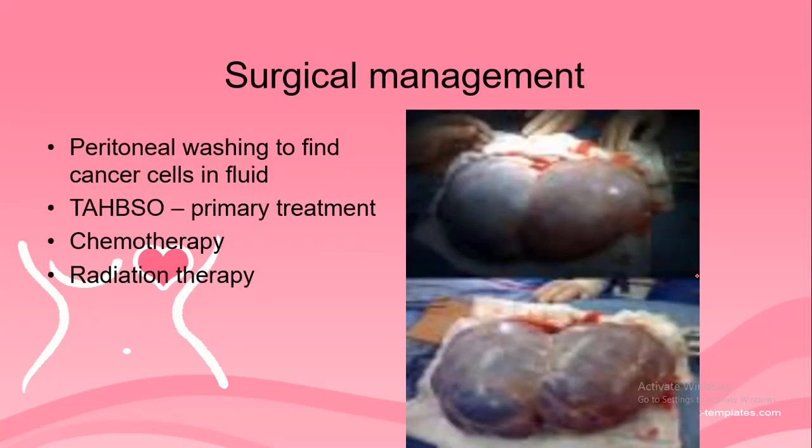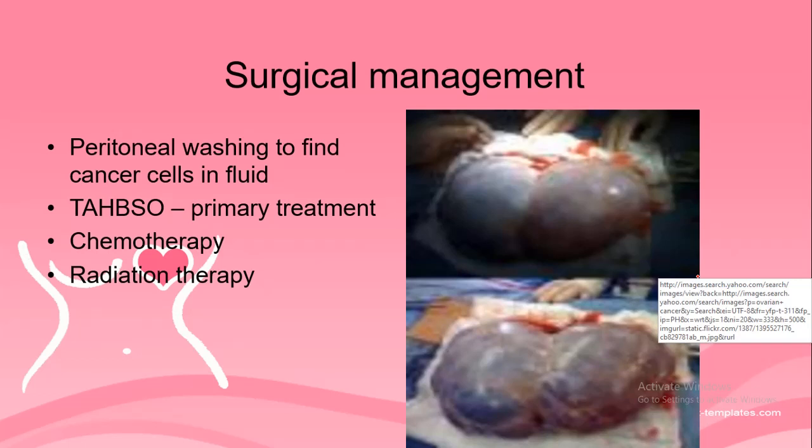For surgical management, they will perform a peritoneal washing to find cancer cells in the fluid. The primary surgical management for ovarian cancer is the Total Abdominal Hysterectomy Bilateral Salpingo-Oophorectomy (TAH-BSO). After surgery, chemotherapy or radiation therapy may be given to prevent further recurrence of the cancer.